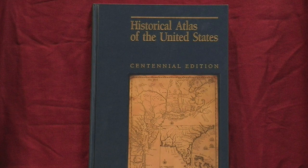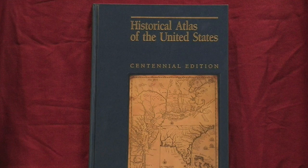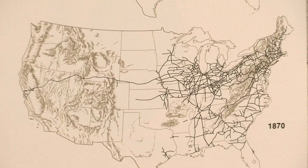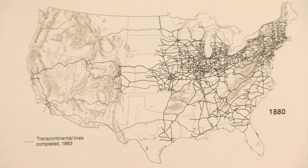Many aspects of American history are beautifully illustrated here, organized around themes like immigration and industrialization. Railroad history is included here, with simple yet poignant maps illustrating the expansion and then the decline of railroads in the United States through time.